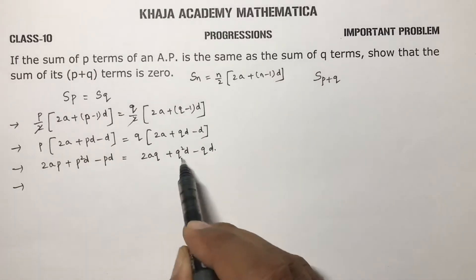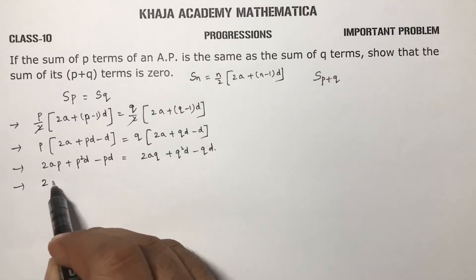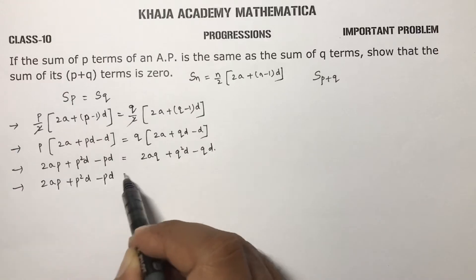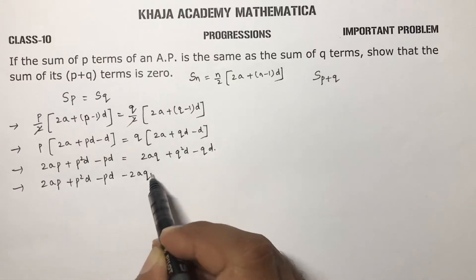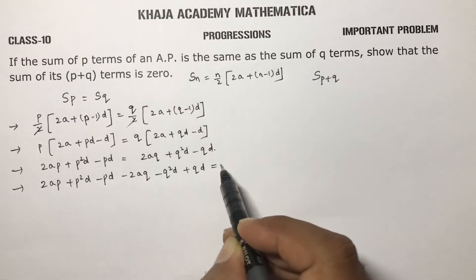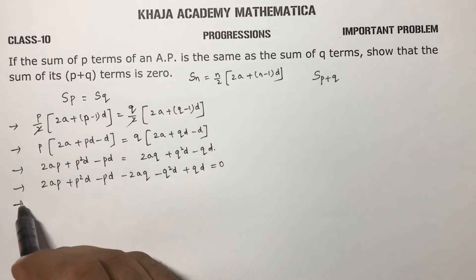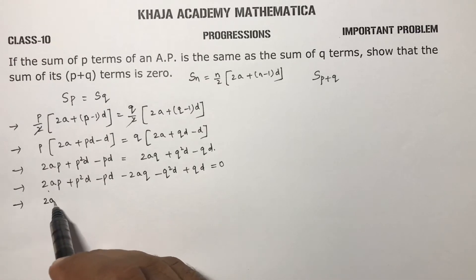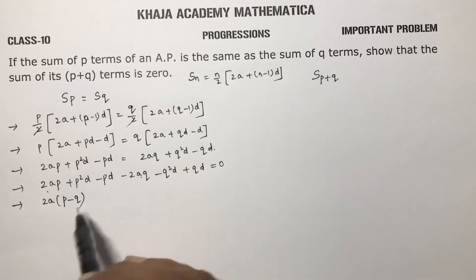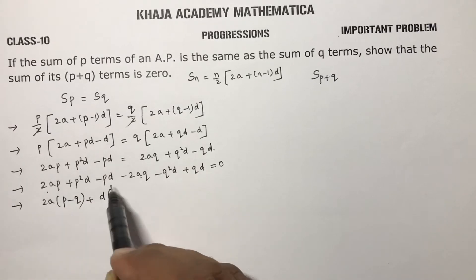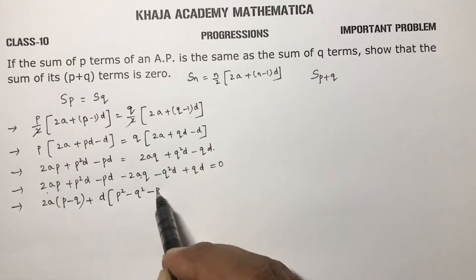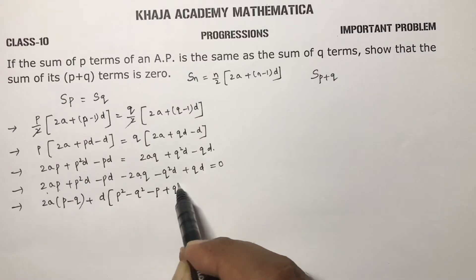Now take all these terms to the LHS: 2ap plus p squared d minus pd minus 2aq minus q squared d plus qd equals 0. Taking 2a common gives p minus q, and taking d common gives p squared minus q squared minus p plus q.